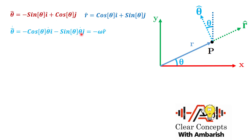Writing d theta/dt as omega, the angular velocity of the particle about the origin, we can see that cos theta i cap plus sin theta j cap is exactly r cap. So the whole expression simplifies to: theta cap dot = minus omega times r cap.